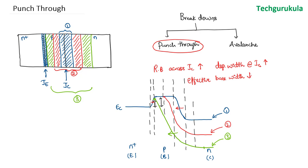If you keep increasing the reverse bias across the collector junction, the amount of current that flows would keep on increasing. Hence we call this a breakdown mechanism, which in this case we have named punch-through, because the collector junction punches through the base making the base width zero, and that depletion region meets the emitter depletion region, at which point the current increases rapidly. To reduce the effect of punch-through, we have to make sure that the doping in the base is higher than the doping in the collector, so that the depletion region extension into the base is lesser compared to the depletion region extension into the collector.